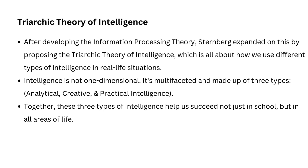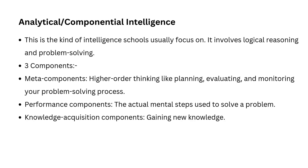Let us now understand the three types of intelligence in more detail. Starting with analytical intelligence, also called componential intelligence. This is the kind of intelligence that helps you solve academic problems like figuring out math problems, writing essays, or analyzing literature — it's all about logic and following steps to reach a solution. In terms of brain work, analytical intelligence involves three main components. The first is meta-components: the strategies we use to plan, monitor, and evaluate problem solving. For example, when you decide how you are going to approach a problem, you are using meta-components.